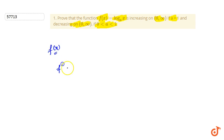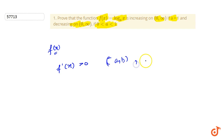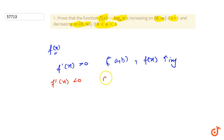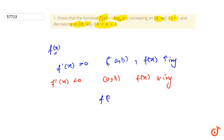If f'(x) is greater than 0 in an interval (a, b), then f(x) is increasing in that interval. And if f'(x) is less than 0 in the given interval, then f(x) is decreasing. So we have f(x) — let's start with f(x).